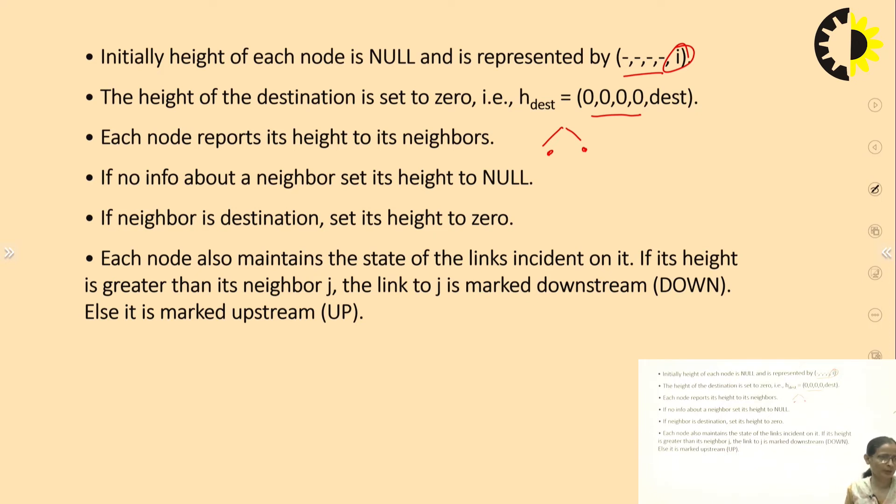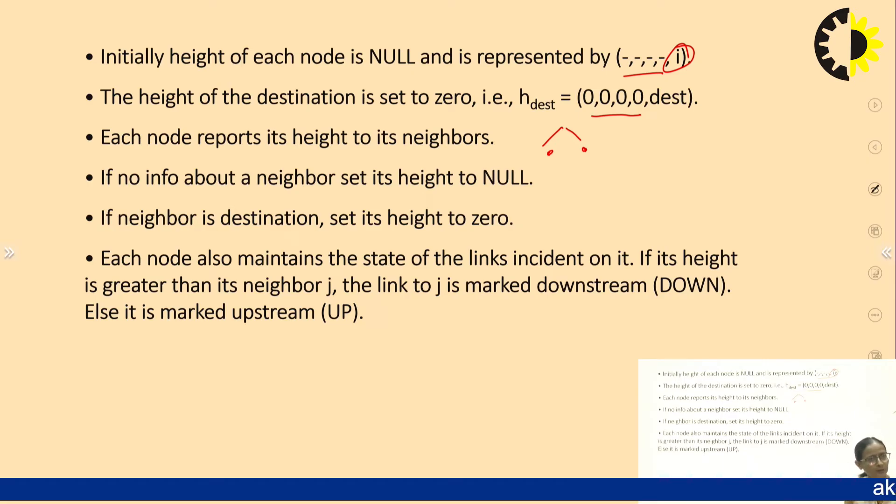Each node also maintains the state of the links incident on it. If its height is greater than its neighbor j, then the link to j is marked as downstream. Otherwise, it is marked as upstream.